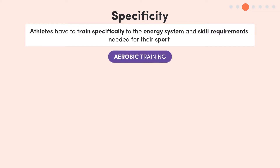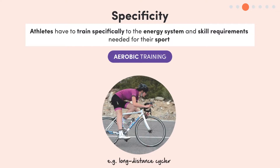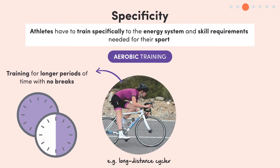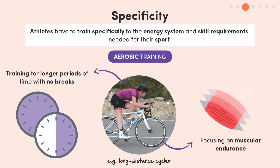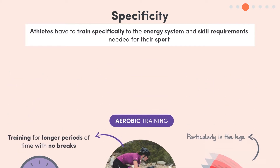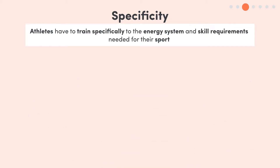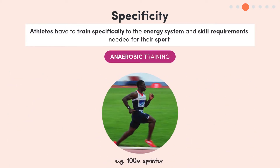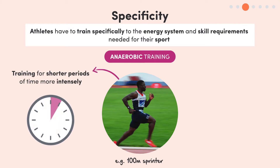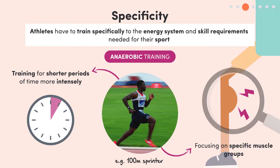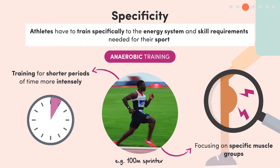For an aerobic athlete, such as a long-distance cyclist, this would mean training for longer periods of time with no breaks and focusing on muscular endurance, particularly in the legs. For an anaerobic athlete, such as a 100-metre sprinter, this would mean training for shorter periods of time more intensely and focusing on specific muscle groups, again such as the legs.